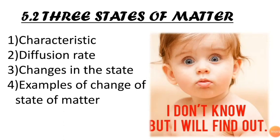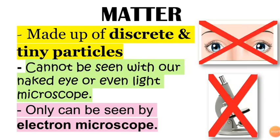5.23 states of matter. Matter is made up of discrete and tiny particles which cannot be seen with our naked eye or even light microscope. It only can be seen by using the electron microscope.